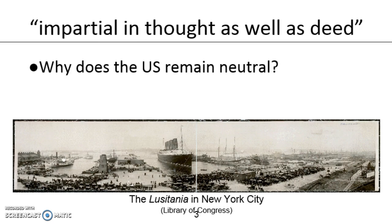The United States, however, once war breaks out in 1914, President Woodrow Wilson says that we must be impartial in thought as well as deed, kind of hearkening back to the United States' proclamation of neutrality in 1796 by George Washington in the midst of the Napoleonic Wars. So why does the United States remain neutral?